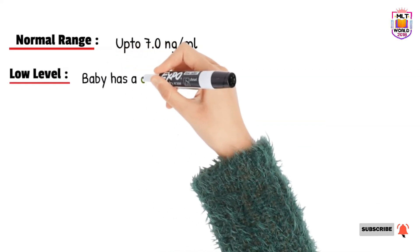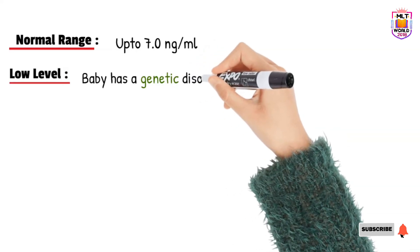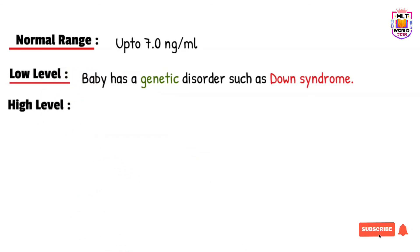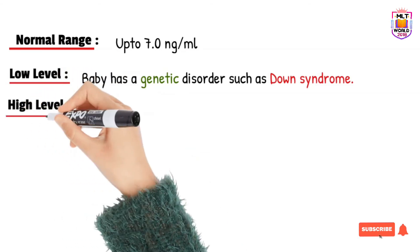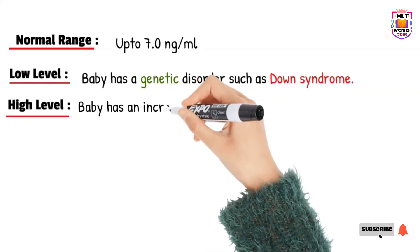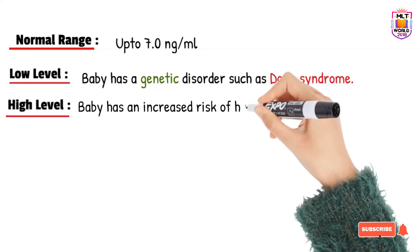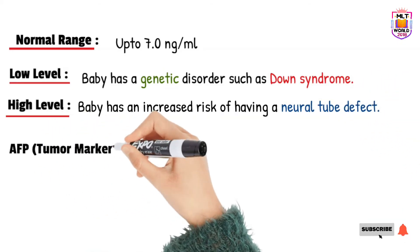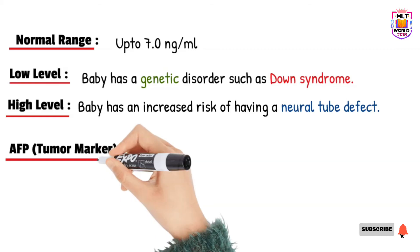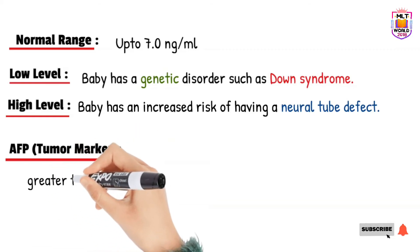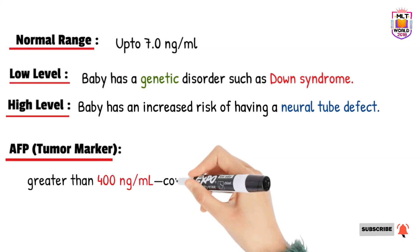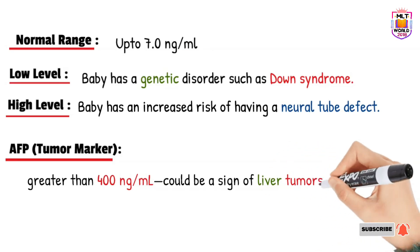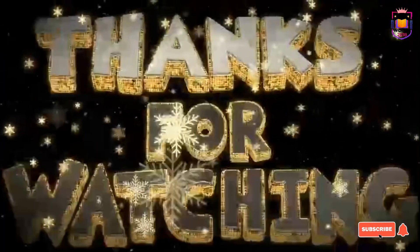If AFP level is very low in pregnant ladies, it is a sign of the genetic disorder Down syndrome. If AFP level is high in pregnant ladies, it indicates the genetic disorder neural tube defect. When AFP is used as a tumor marker, a result greater than 400 nanograms per mL is a sign of a liver tumor.